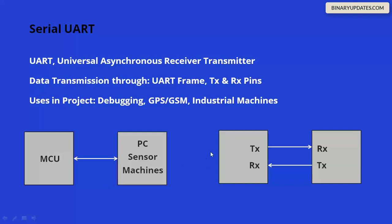Because UART doesn't use a clock, data transmission happens through a frame — a specific structure for packing data. Communication happens over TX and RX pins: the TX pin of one device connects to the RX pin of the other. When I'm speaking and you're listening, if both speak simultaneously it makes no sense — similarly, one device transmits while the other receives. This is called full-duplex transceiver communication.